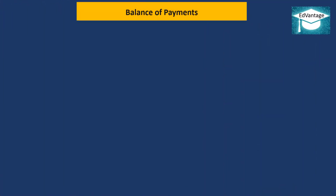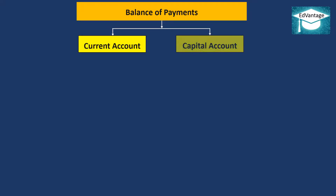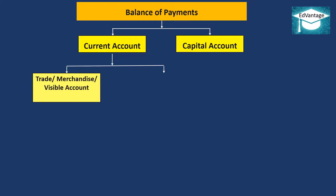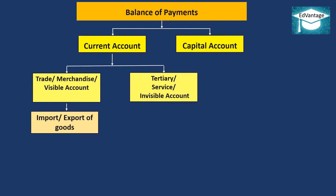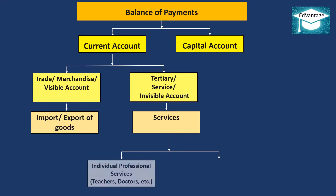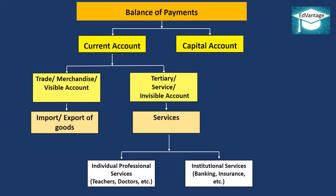The balance of payment of a country comprises two main accounts: current account and capital account. The current account is further divided into two: 1. Trade or merchandise or visible account, which consists of import or export of goods, and 2. Tertiary or service or invisible account, which comprises services, further divided into (A) individual professional services like teachers, doctors, etc., and (B) institutional services like banking, insurance, etc.